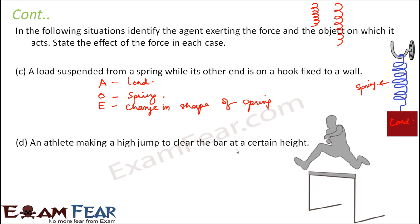Next one, an athlete making a high jump to clear the bar at a certain height. So in this case, who is exerting force? Obviously, the force is being exerted by the athlete, but which part of his body is exerting force? Obviously, the muscles of the athlete is exerting the force. And what is the object on which the force is being exerted? The object is the athlete because the muscles are exerting force on the athlete. And that is why the athlete is moving, correct?